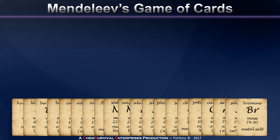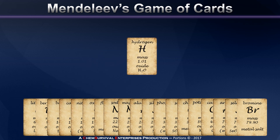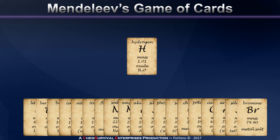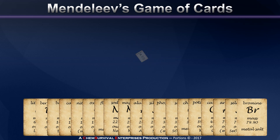Finally, before we can begin, we have to discard hydrogen. Because hydrogen, although it has a very special place in the periodic table, somehow wasn't quite clear to Mendeleev what that was. So for the sake of clarity, let's just ignore hydrogen for the moment.